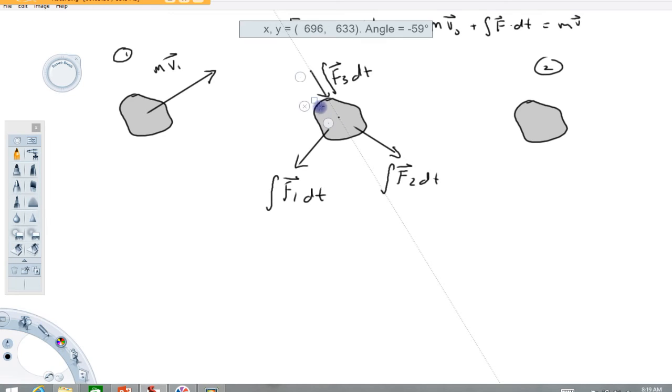Then we draw our final momentum vector. So looking at this initial momentum and the direction of these impulses, maybe my final momentum is pointing something like this, mv₂. And again it's a vector quantity.